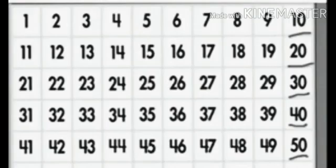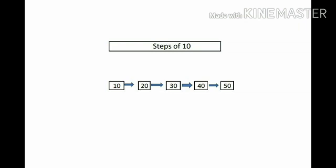Here we have to count steps of 10, means we have to find the difference of 10 numbers. So children, here if we move from the number 10, the counting, we will get the number 20, then 30, then 40, and then 50. So here starting from 10 and counting in steps of 10, the numbers we get are 20, 30, 40, and 50. Do you understand children?